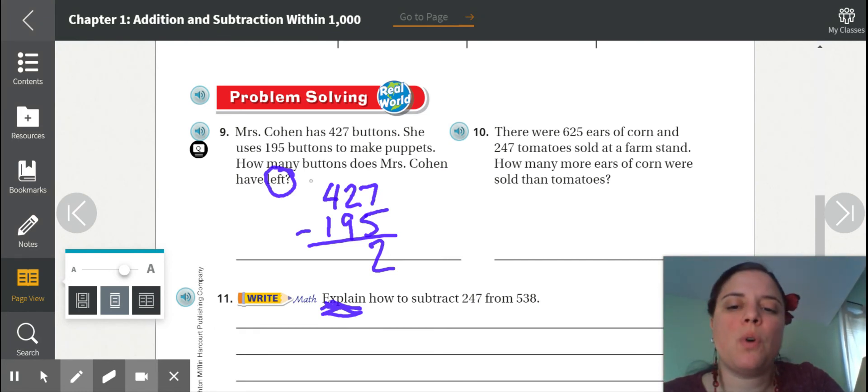So our next door neighbor is 4. So we're gonna cross out the 4. Turn it into a 3. Cross out the 2. 2 plus 10 is 12. So 12 minus 9 is 3. 3 minus 1 is 2. Okay. So the answer is 232.